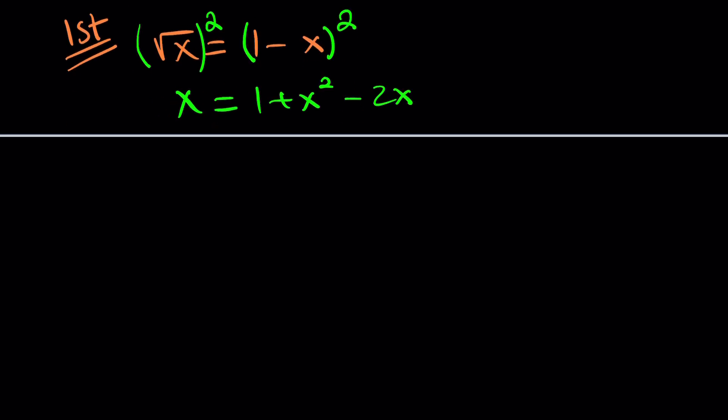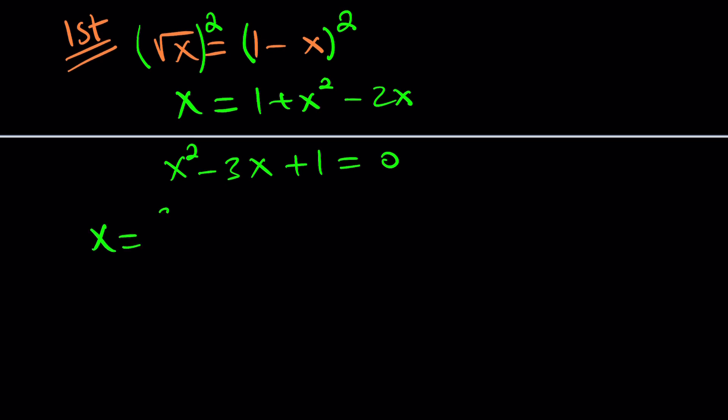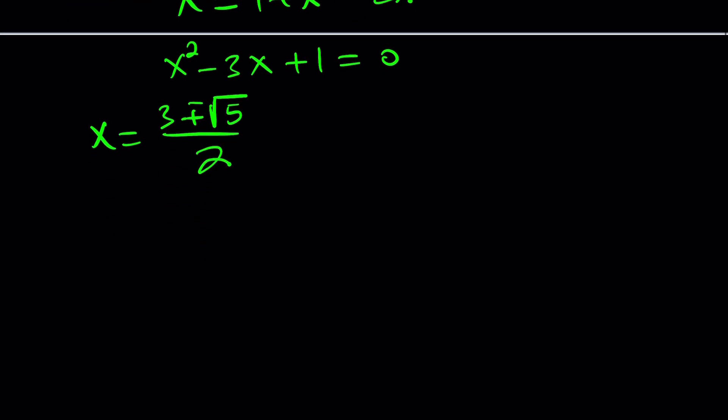You can put everything on the same side. X squared minus 3x plus 1 equals 0. And then solve this equation. How do you solve it? Easy. This is not factorable, but it's still easy because it's quadratic. You can use the formula negative b plus minus the square root of b squared minus 4ac. That's 9 minus 4, which is 5, divided by 2. Hopefully you know the quadratic formula. If not, look it up and always ask questions.